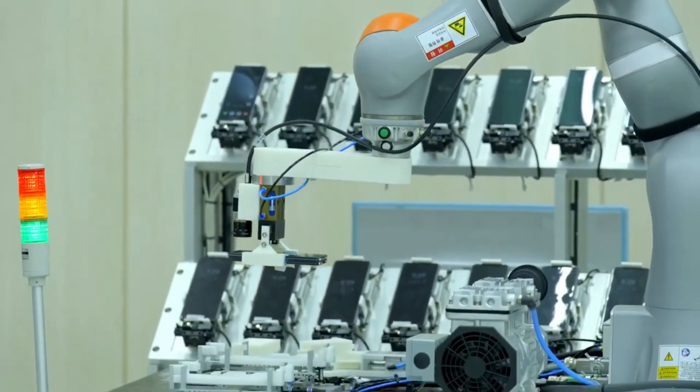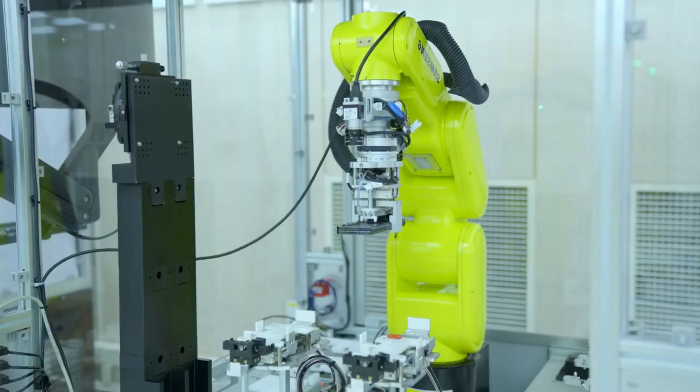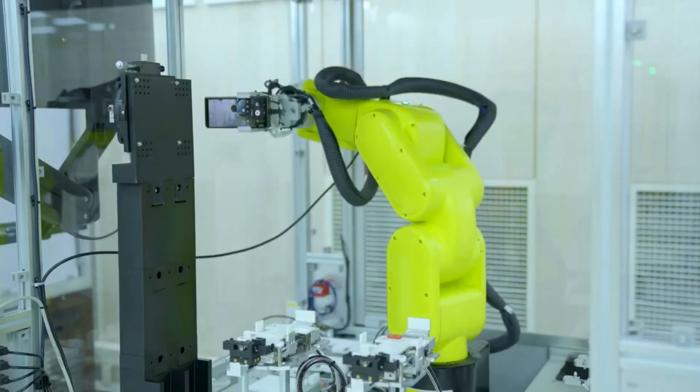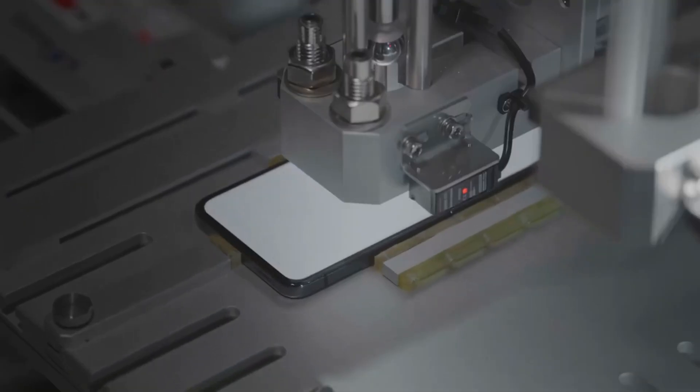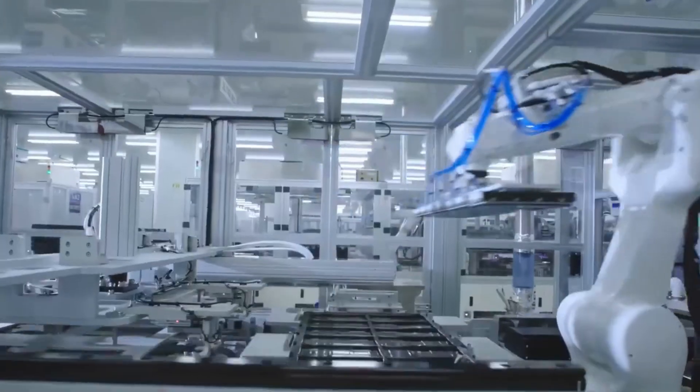The actual assembly? That's handled by precision robotic arms that can place components with micrometric accuracy. We're talking about robots that can position a camera module or install a battery with precision that human hands simply cannot match.